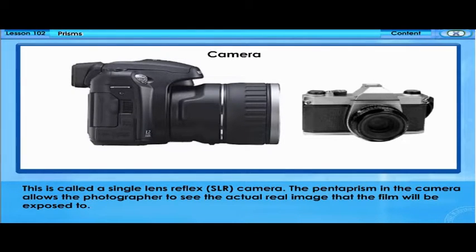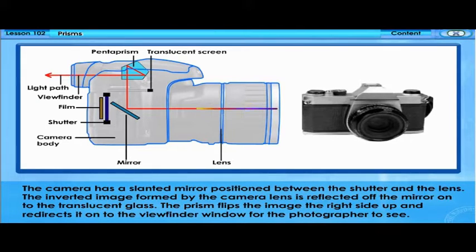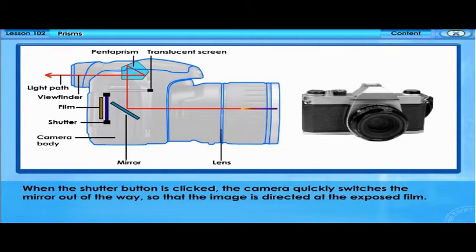This is called a single-lens reflex camera. The pentaprism in the camera allows the photographer to see the actual real image that the film will be exposed to. The camera has a slanted mirror positioned between the shutter and the lens. The inverted image formed by the camera lens is reflected off the mirror onto the translucent glass. The prism flips the image the right side up and redirects it onto the viewfinder window for the photographer to see. When the shutter button is clicked, the camera quickly switches the mirror out of the way so that the image is directed at the exposed film.